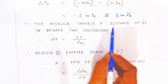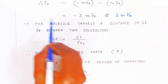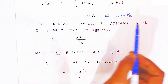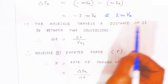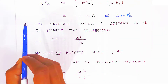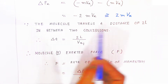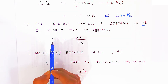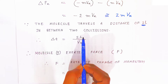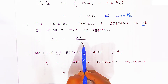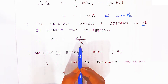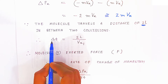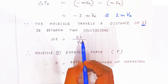The molecule travels a distance of 2L. When it changes momentum, the molecule is also traveling a distance of 2L — it collides and comes back, so the total distance is 2L, between two collisions. Now, the time taken by the particle is distance divided by velocity. The delta t equals 2L divided by vx.